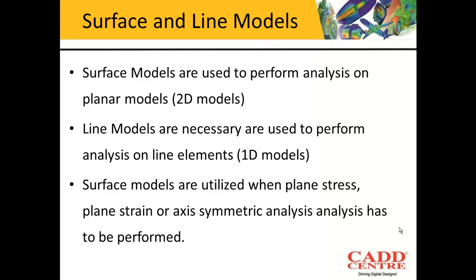In the first chapter we already discussed 2D elements and 1D elements. Whenever the thickness of the model used for analysis is very small compared to the other dimensions, you can convert that model into a 2D model. Similarly, whenever you have truss problems, beam problems, or pipe problems, instead of considering a 3D geometry you convert it into a 1D geometry.